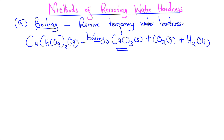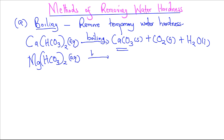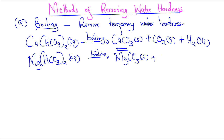Similarly, when magnesium hydrogen carbonate is boiled, it forms magnesium carbonate, which has no dissolved magnesium ion, plus carbon dioxide gas, plus water.